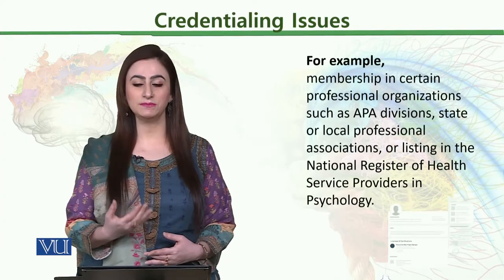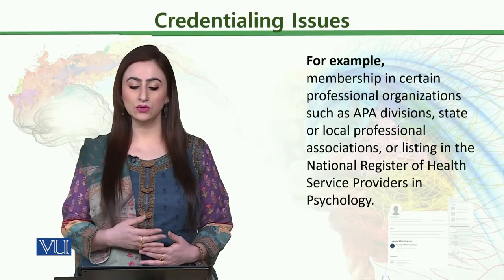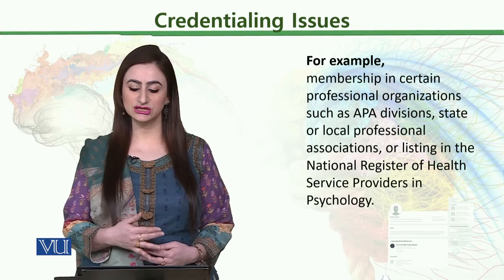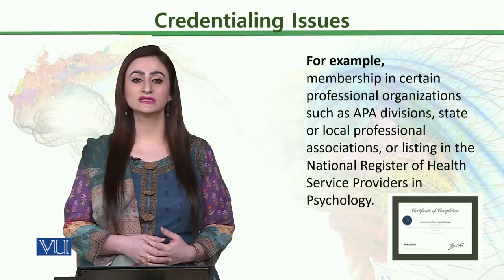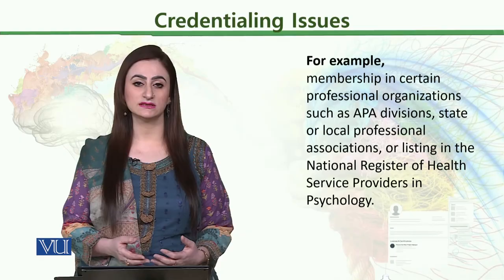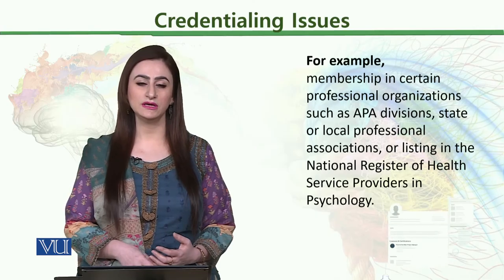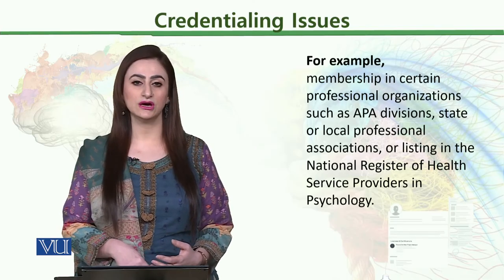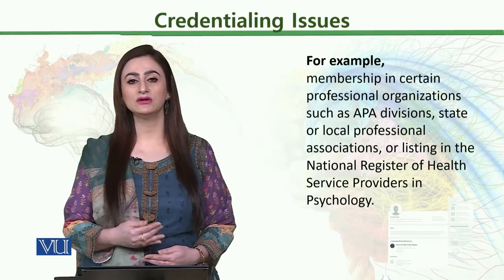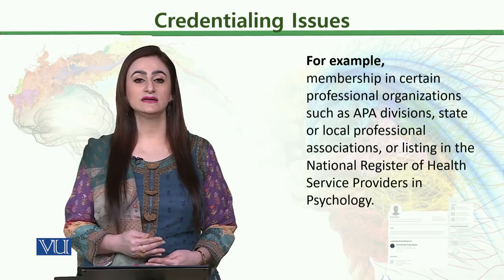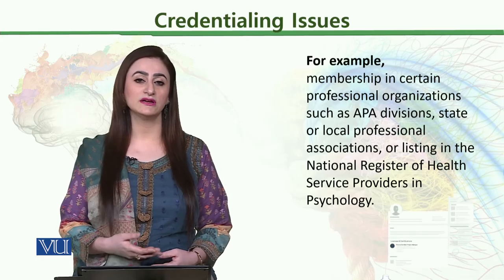Tertiary credentials include membership in certain professional organizations such as APA divisions, in Pakistan specifically PPA and PACT, state or local professional associations, or listing in the National Register of Health Services Providers in Psychology. They can also include international organizations such as the International Council for Psychologists (ICP) and the British Council for Psychologists. To become part of these, it is essential to first have a primary degree in psychology or psychotherapy, then supervised training and a secondary certificate, after which you are eligible for recognition by these international bodies as an affiliate or life member.